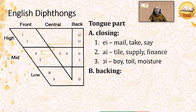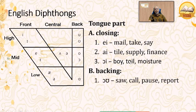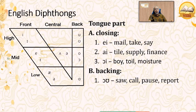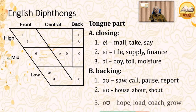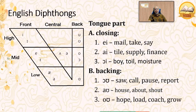We also have backing diphthongs, where the tongue moves to a back vowel position. The diphthong /ɔː/ is represented by letters 'aw', 'a', 'al', 'or' as in 'so', 'whole', 'horse', 'report', 'law', 'call', 'more', 'pause', 'court'. The diphthong /aʊ/ is as in 'house', 'about', 'shout'. And the diphthong /oʊ/ is as in 'hold', 'load', 'coach', 'grow'.